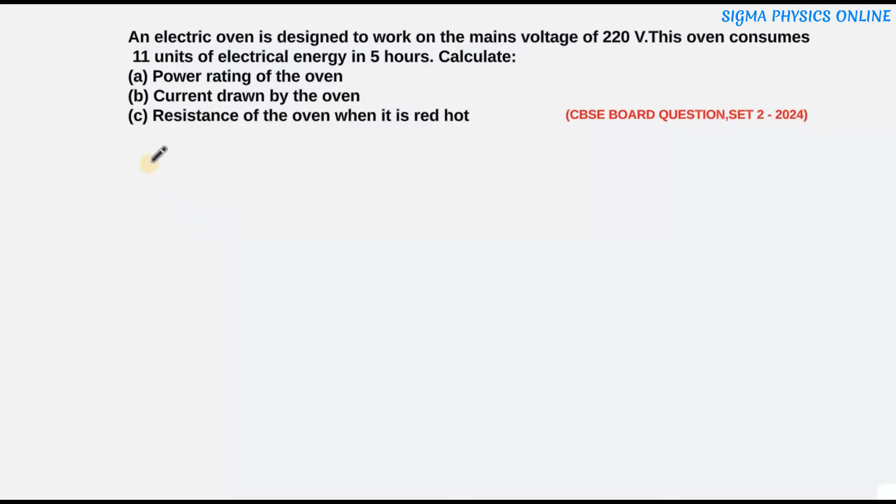First, let's write down what all are given. The supply voltage of the oven is given as 220 volts. Then the oven consumes 11 units of electrical energy, so I write E is 11 units, which means 11 kilowatt hour, which is 11,000 watt hour. Then we have the time given is 5 hours.